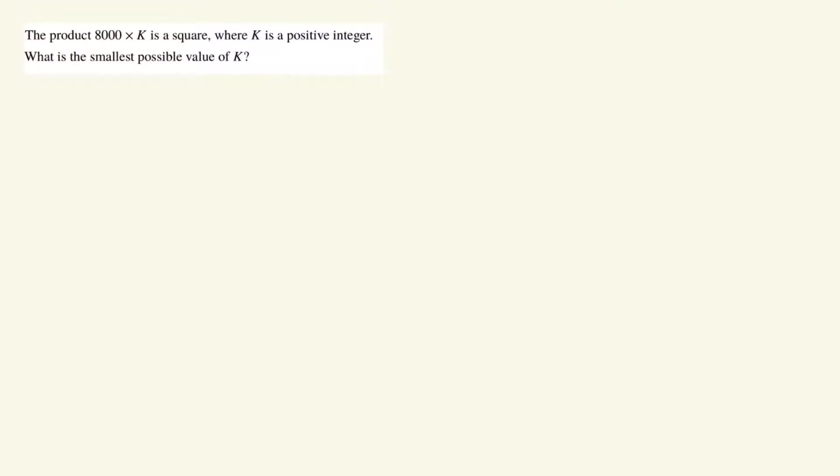Hey guys, the product 8,000 times k is a square, where k is a positive integer. What is the smallest possible value of k? If you want to try this problem yourself, you can pause the video now, and then when you're ready, we'll go through the solution together.